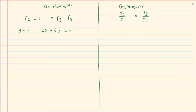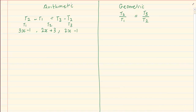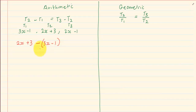Then they start with questions where they give you unknowns. When saying term 2 minus term 1, the most common mistake is when pupils write 2x plus 3 — that's term 2 — then minus 3x minus 1. If you put the brackets correctly, you end up with minus 3x plus 1, whereas without brackets you end up with minus 3x minus 1.